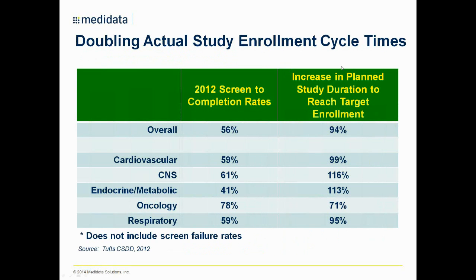So why is this actually happening? What's causing this increase to occur? If we look at some of the information from the Tufts Center for the Study of Drug Development on factors affecting this increase in clinical research duration, we look at things like screen-to-completion rates. Over a 10-year period, in 2012 we saw 56% of patients screened into a study complete it. As a result, we've seen almost a 100% increase in the amount of time required to enroll patients to achieve the target.